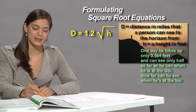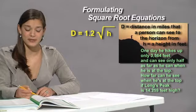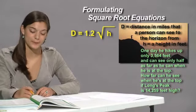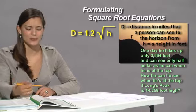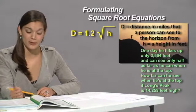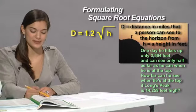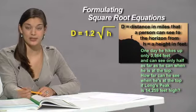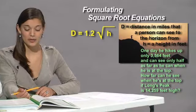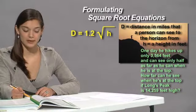How far can you see when he's at the top if Long's Peak is 14,259 feet high? Let's first decide what we're trying to solve for and then what we know. We're trying to find the distance he sees while at the top, or d in the equation. And we know h, the height of Long's Peak, is given.